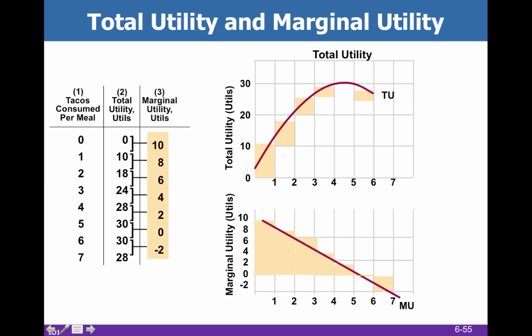Here we can look at that graphically. We're going to talk about tacos instead of donuts. As you go from 0 tacos to 1, and then from 1 taco to 2, you can see that total utility goes from 0 to 10. Then when you eat the second taco, you get 8 more — so 8 is your marginal utility — and when you add 8 to 10, you get 18. Then when you add 6, you get 24. Total utility tends to rise as you eat more, while marginal utility tends to fall. The numbers get bigger in total, but they do peak out.